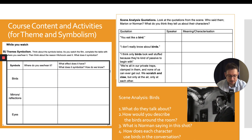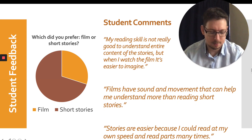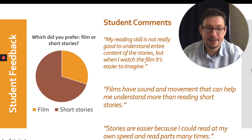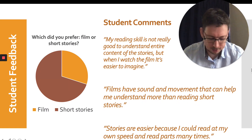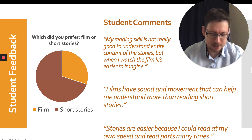Lastly, instead of having students find symbols themselves in the films, which I felt could be difficult and detract from actual observation and analysis, I gave students three prominent symbols used throughout the film Psycho and had students note down their observations of them. In class, I used scene analysis and quotation analysis to dissect the use of each symbol and guide students to their own interpretations of meaning. In the post-course survey, I asked students whether they preferred film or short story and why. The majority said they preferred film because it was easier to imagine and the sound and movement helped them understand more. However, some students preferred reading because they could read at their own pace. This shows that film and literature presented different challenges, but also gave variety which helped engage students differently.